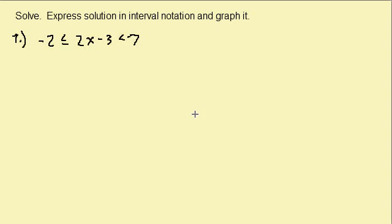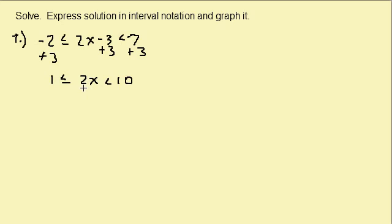Let's look at solving double inequalities. Notice we have two inequality symbols, so when we solve this we want to get the variable in the middle and everything else to the outside. We want to get rid of the three, so we're going to add three to all three parts. We get: one is less than or equal to 2x less than ten.